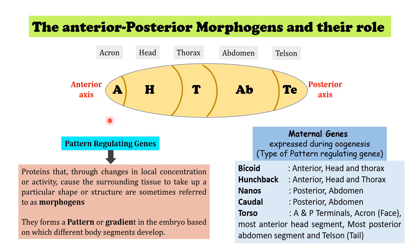Morphogens are basically the product of pattern-regulating genes. They are proteins that, through changes in local concentration or activity, cause the surrounding tissue to take up a particular shape or structure. These morphogens form patterns or gradients in the embryo, based on which different body segments develop. The segments in Drosophila from anterior to posterior are: acron, head, thorax, abdomen, and telson or tail.